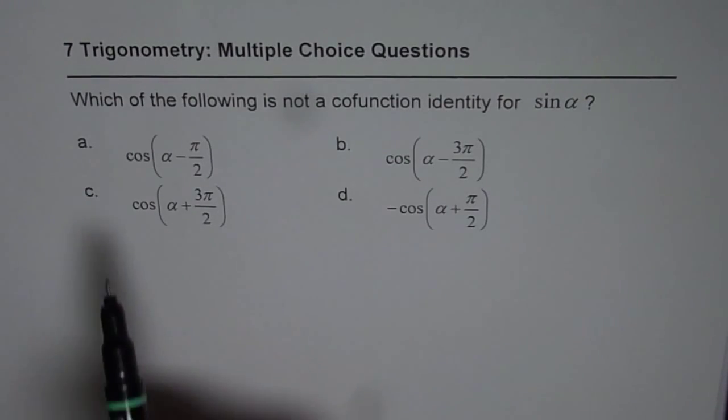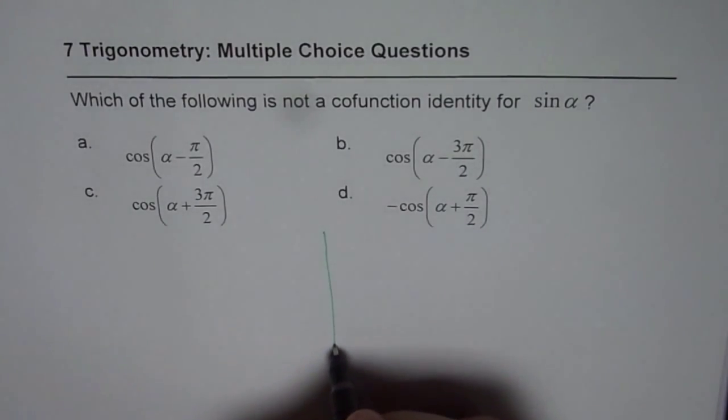The question here is, which of the following is not a cofunction identity of sine of alpha? We are given four choices. Sine of alpha, let us look into that.